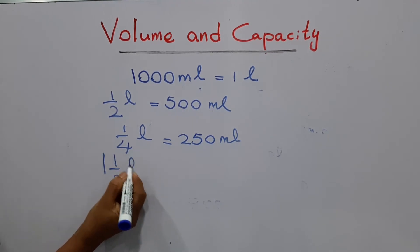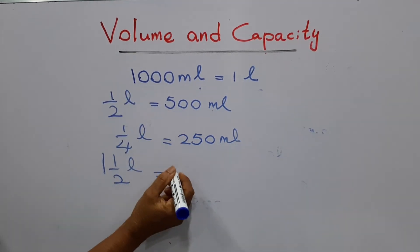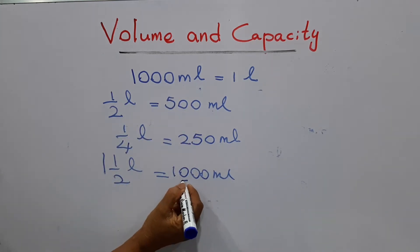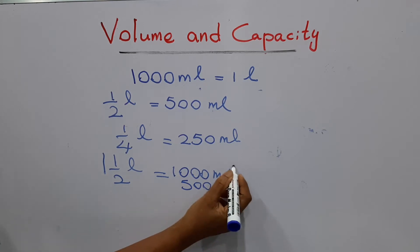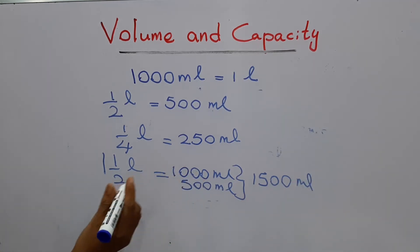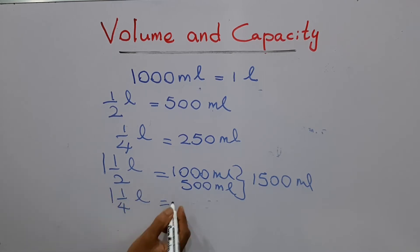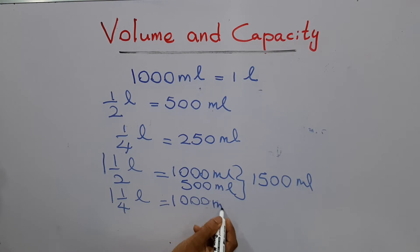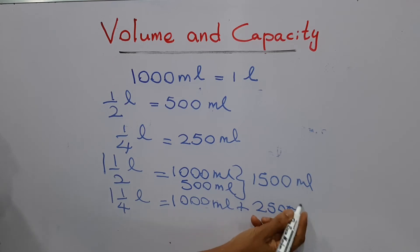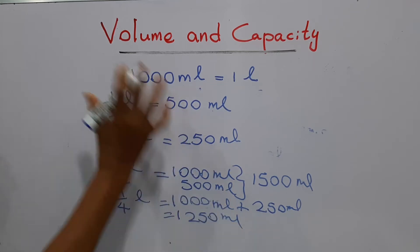One and a half liters — how many milliliters are there? One liter means one thousand milliliters, plus half a liter means five hundred milliliters. All together that gives one thousand five hundred milliliters. The next question is one and a quarter liters: that means one thousand milliliters plus a quarter liter, which is two hundred and fifty milliliters, giving one thousand two hundred and fifty milliliters in total.